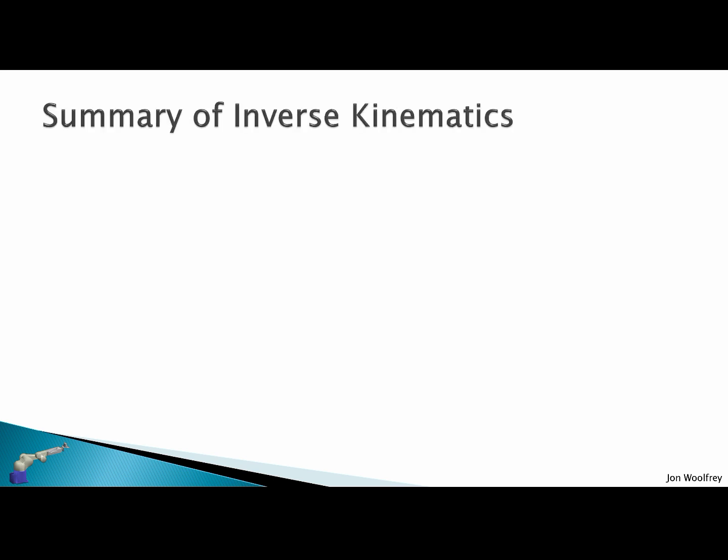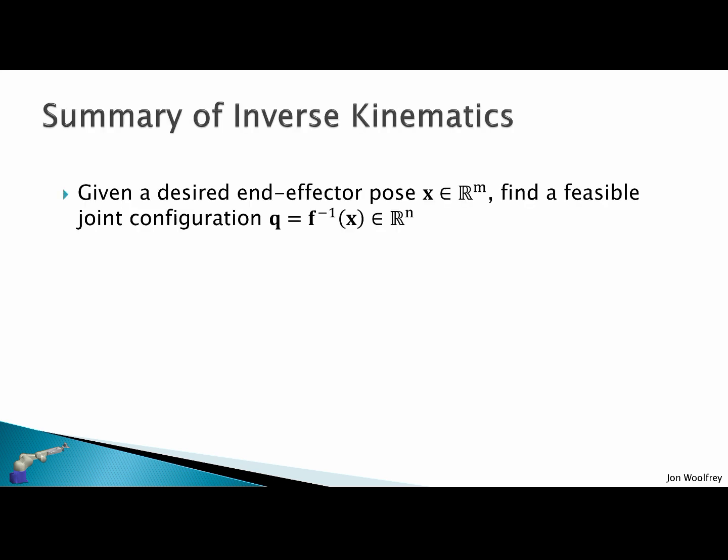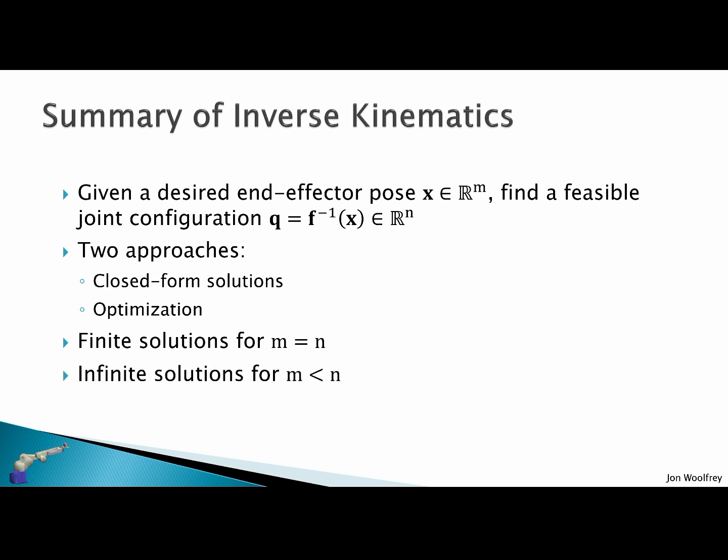To summarize inverse kinematics: given a desired end effector pose x in m dimensions, find a feasible joint configuration q in n dimensions. There are two approaches. First, to use closed-form solutions, as we saw in this lecture, and the second is to use optimization. We saw that we have finite solutions for m is equal to n, and we have infinite solutions for m is less than n.